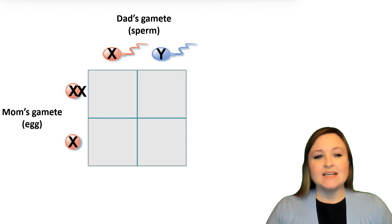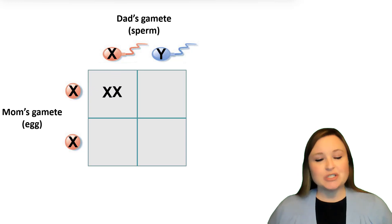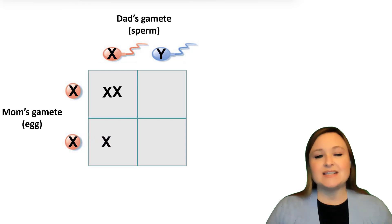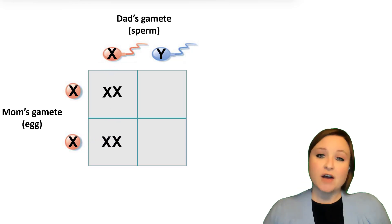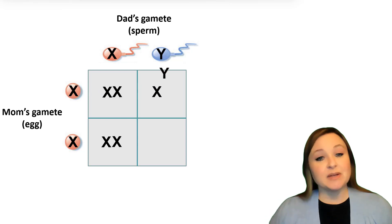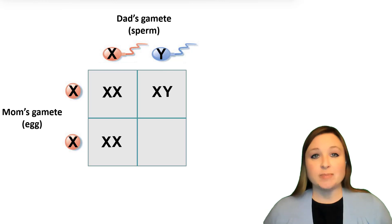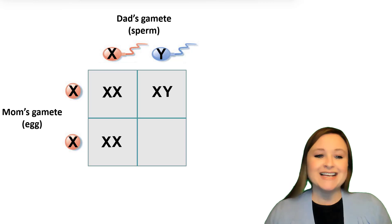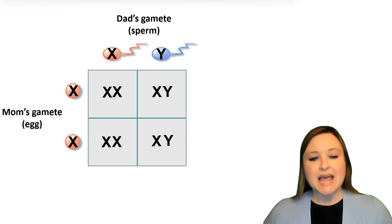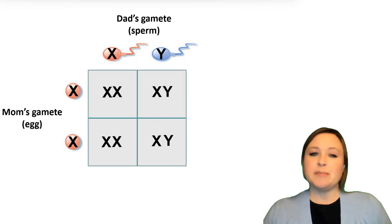If this egg is fertilized by this sperm, then the offspring will have two X chromosomes, and that means the offspring will be female. If this egg is fertilized by this sperm, the offspring will also be female. If this egg is fertilized by the sperm carrying the Y chromosome, the offspring will have an X and a Y chromosome and will be male. And in our last scenario, this egg from mom is fertilized by this sperm from dad, so the offspring have an X and a Y chromosome — this person will be male.